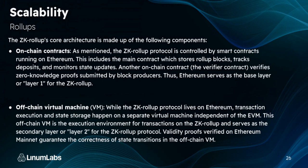The ZK rollup architecture has the following components. There are on-chain contracts: the ZK protocol is controlled by smart contracts running on Ethereum. This includes the main contract, which stores rollup blocks, tracks deposits, and monitors state updates. There's also the verifier contract, usually written in Solidity, which verifies zero knowledge proofs submitted by block producers. Ethereum serves as the base layer or layer one for the ZK rollup.